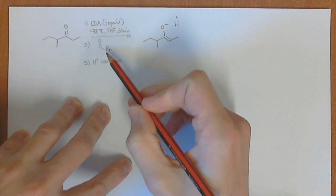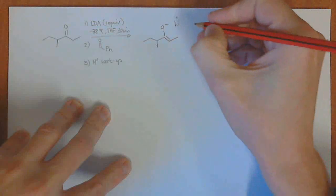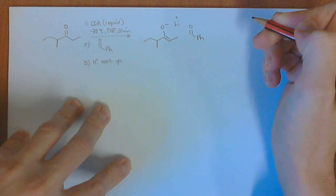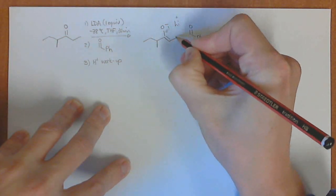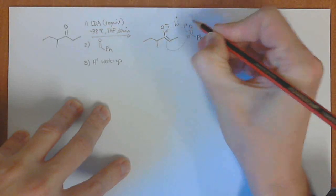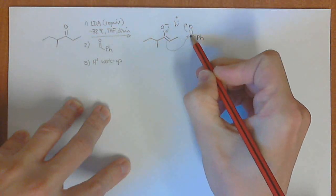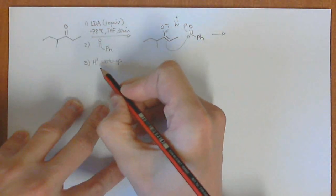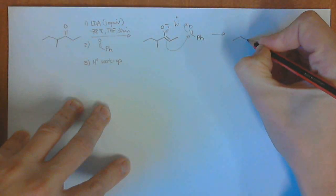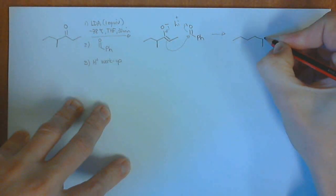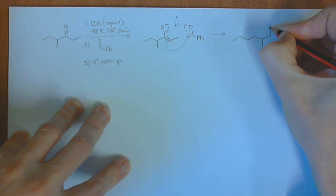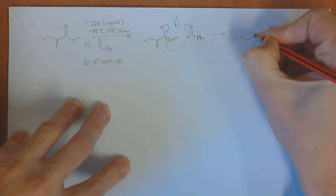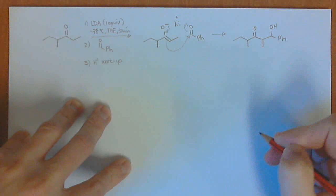Alright, and we're just reacting this with a really boring aldehyde, it's benzaldehyde, and so we can do this whole mechanism, this is going to kick in over here, that's going to kick in, and that's going to kick out over there. So we're forming a new carbon-carbon bond over there, and after protonation in the workup, the product is going to look something like this. That's the new bond that's being formed, there's the OH, there's the phenyl, and a methyl group over there.